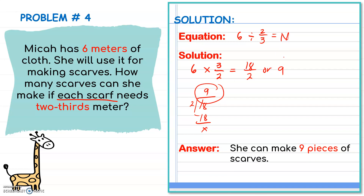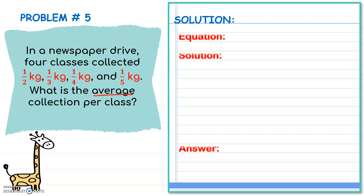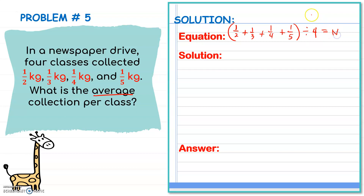Therefore, she can make 9 pieces of scarves. Now let's have problem number five. In a newspaper drive, four classes collected one-half kilogram, one-third kilogram, one-fourth kilogram, and one-fifth kilogram. What is the average collection per class? When you see the word average, the operation used is division. We need to add all these numbers and divide the sum by the number of addends, which is four.